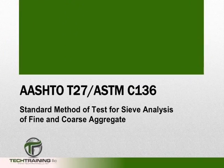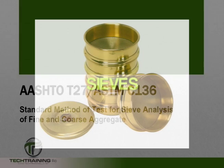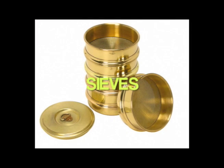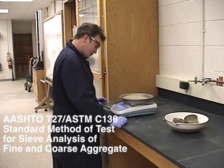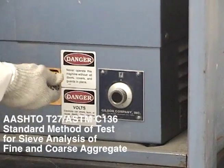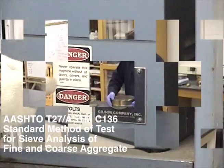AASHTO T27 and ASTM C136 are the standard method of test for sieve analysis of both fine and coarse aggregate. Materials retained on the 4.75mm or No. 4 sieve are considered to be coarse aggregate, while those materials passing the 4.75mm sieve are considered to be fine aggregates.